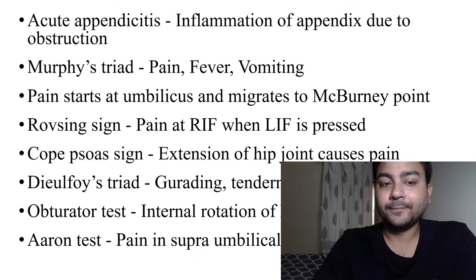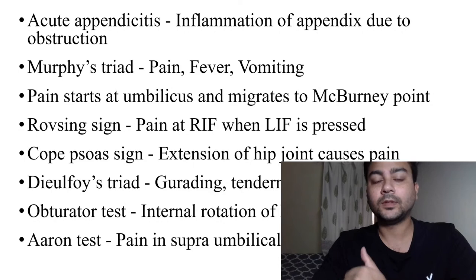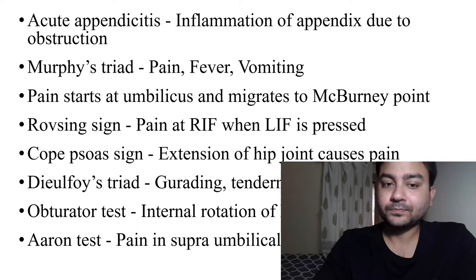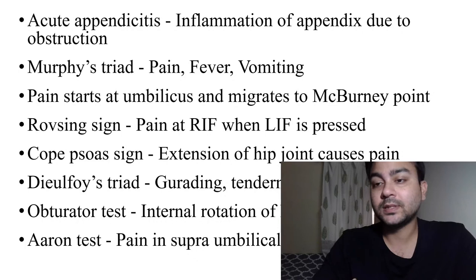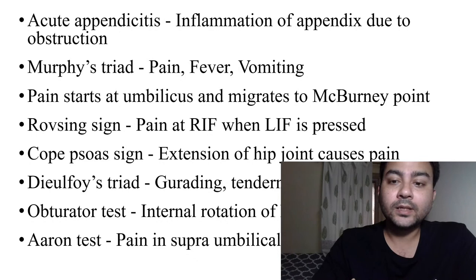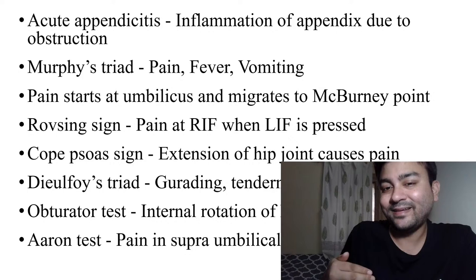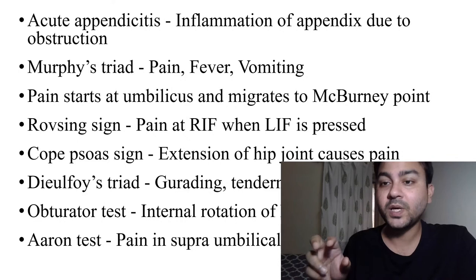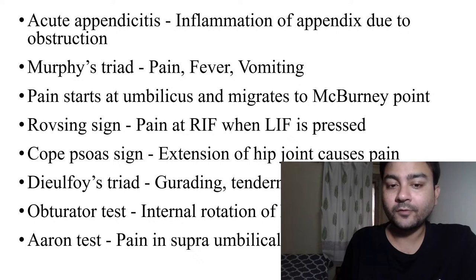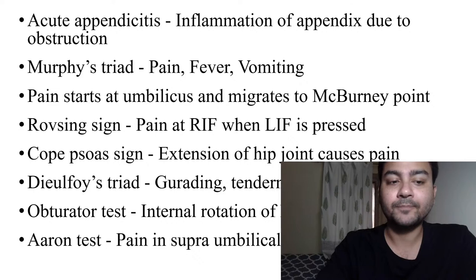Cope's psoas sign and the obturator test are caused by the inflamed appendix coming indirectly in contact with the psoas muscle and obturator muscle respectively. In the psoas sign, the hip joint is extended, bringing the psoas muscle into indirect contact with the inflamed appendix, causing pain in the right iliac fossa. In the obturator test, internal rotation or flexion of the hip causes pain in the right iliac fossa via the obturator muscle.